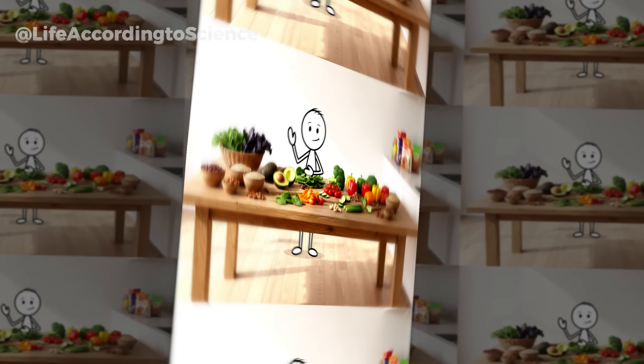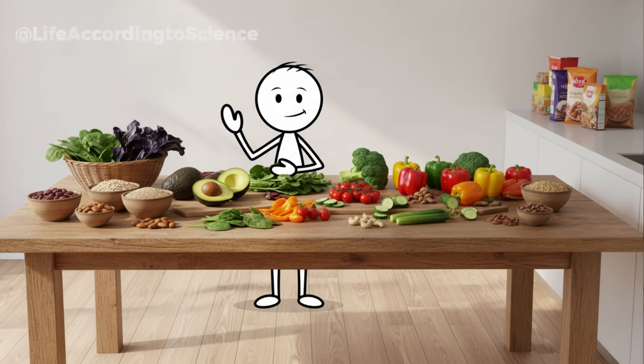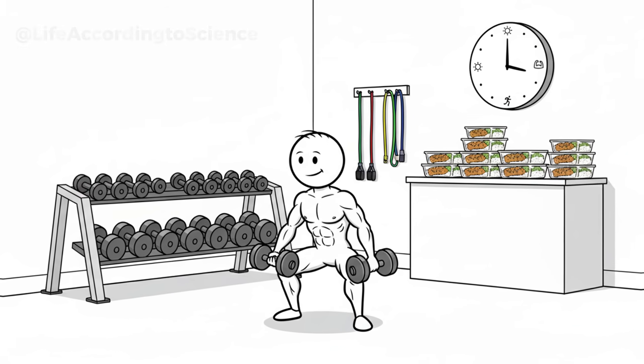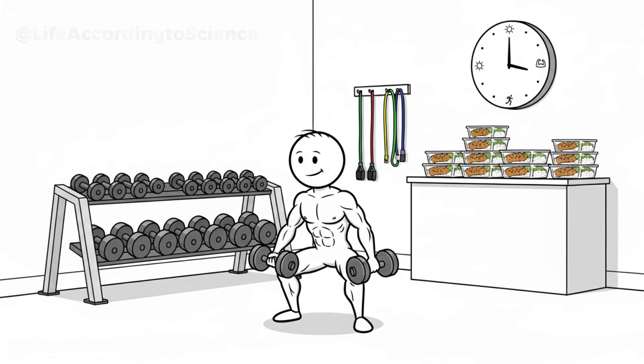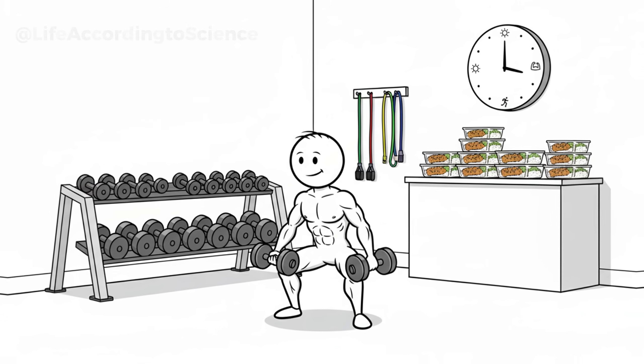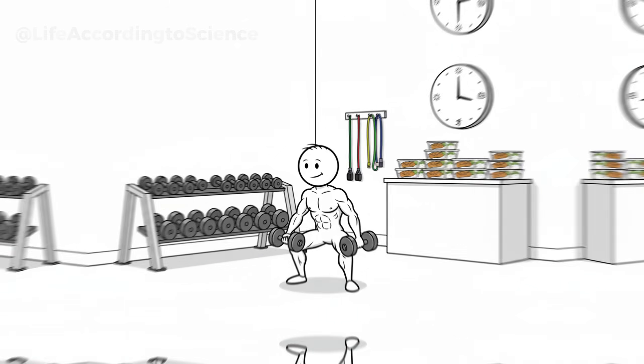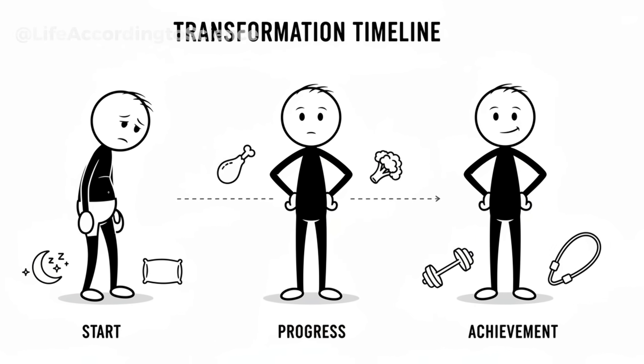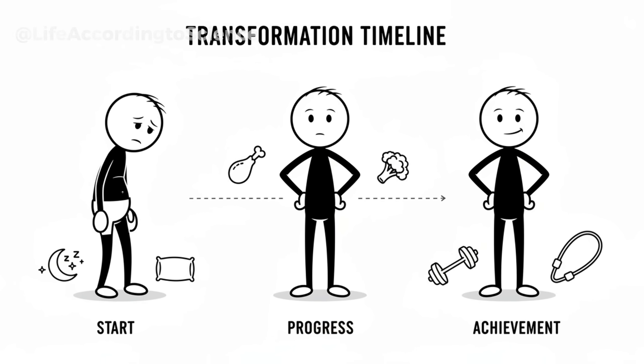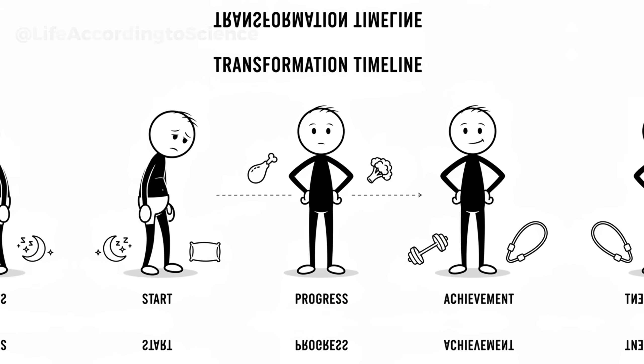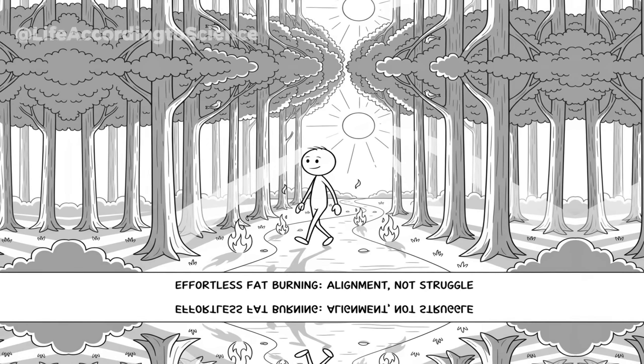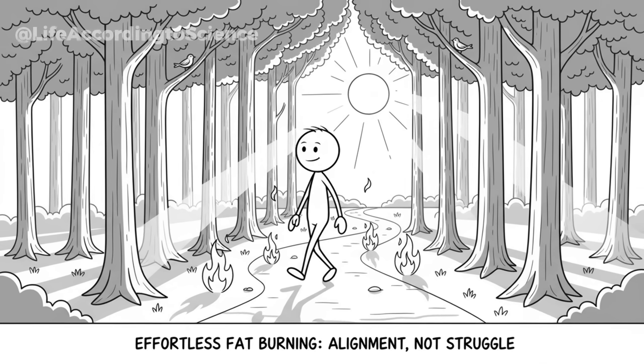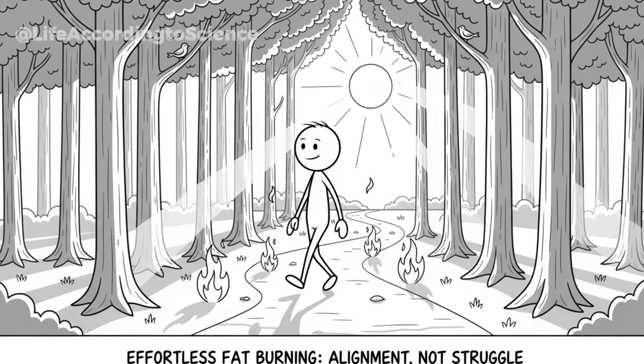The problem isn't fewer carbs, it's restoring insulin sensitivity. That means eating whole, unprocessed foods, spacing your meals to allow insulin levels to drop, and improving muscle mass through strength training. Every rep, every night of good sleep, every nutrient-dense meal slowly retrains your body to listen to insulin again. Once that happens, your metabolism wakes up. Fat burning becomes natural, steady, and effortless, not forced or temporary.